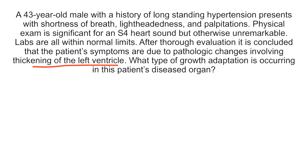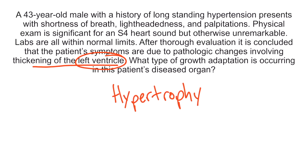Thinking about the left ventricle of the heart, we can confidently say that cardiac myocytes are a permanent cell type. So in this case, the cells are getting larger, or undergoing hypertrophy, rather than hyperplasia. Remember, hyperplasia does not happen in permanent tissues like the heart. So the type of growth adaptation occurring here is hypertrophy.